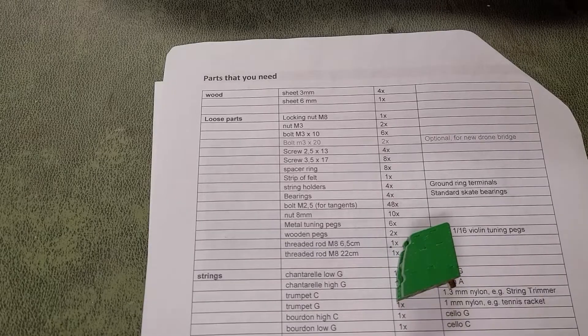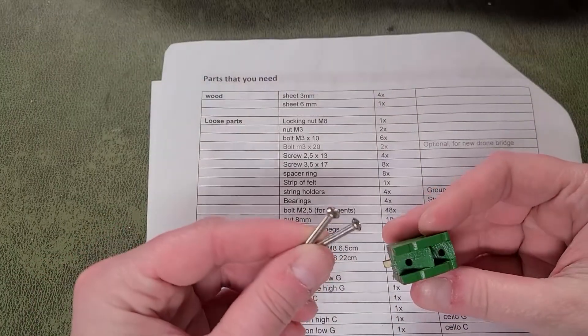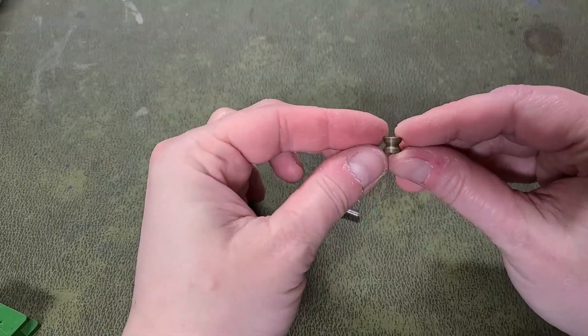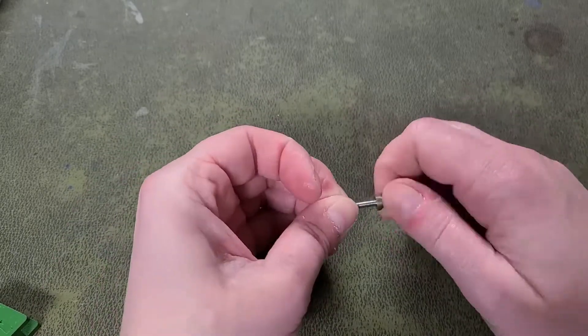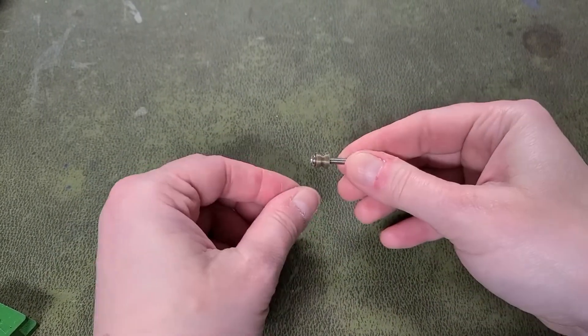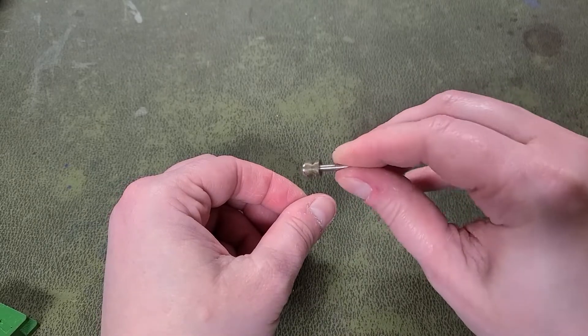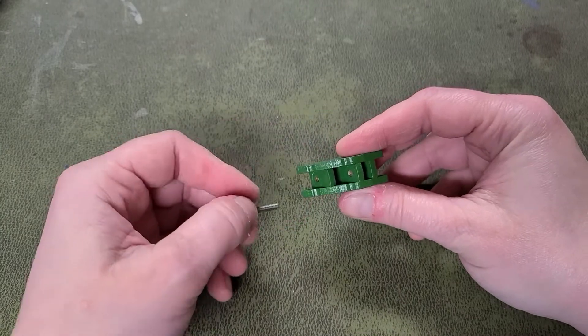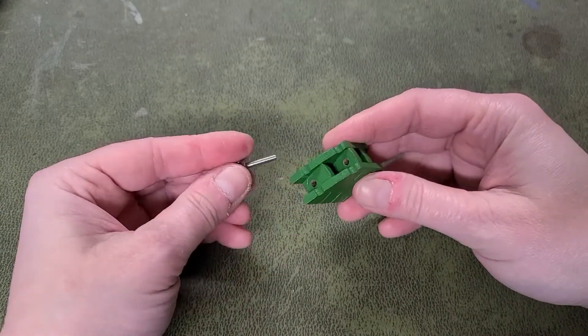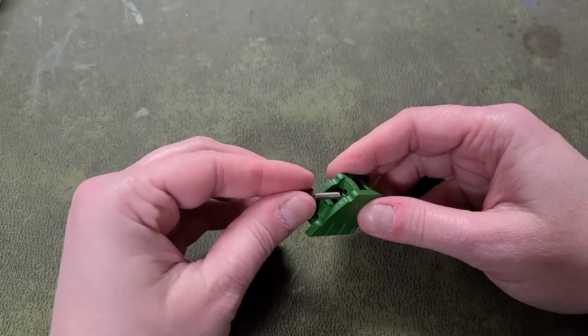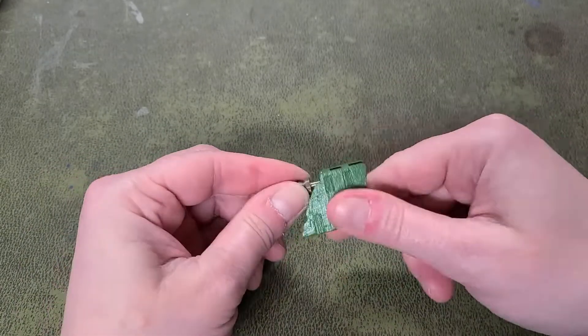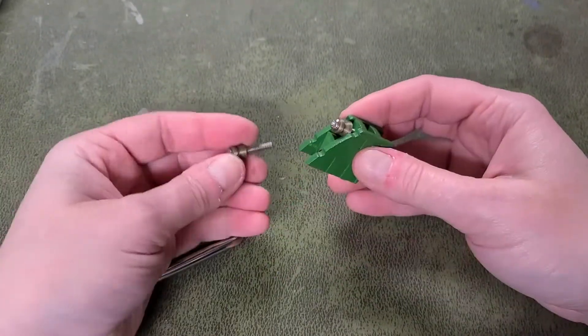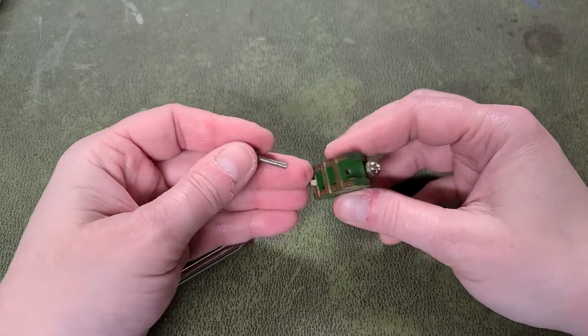To set up the alternate drone bridge, you'll need the two 20mm M3 bolts. First, I'll go ahead and thread on the printed collars that will support the drone strings, and then thread the bolts into the bridge. One through the top two holes, and one through the bottom two holes.